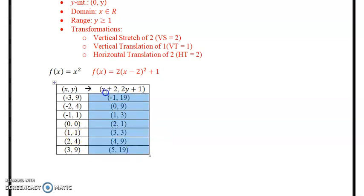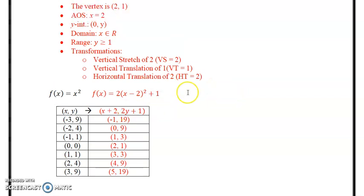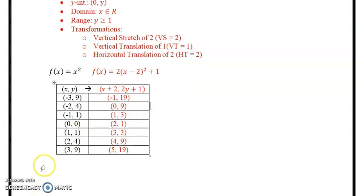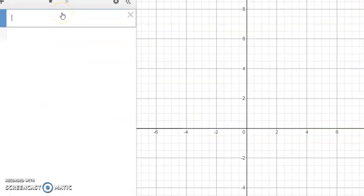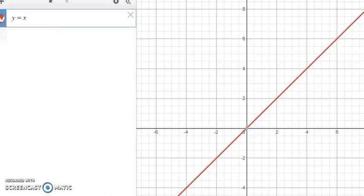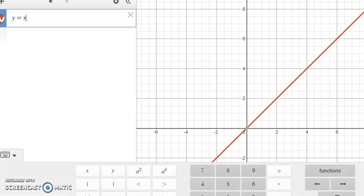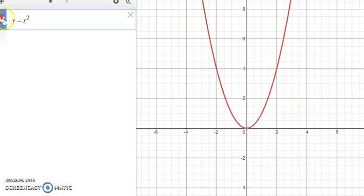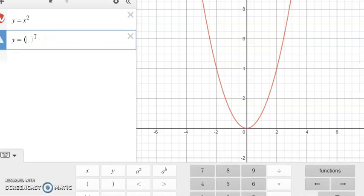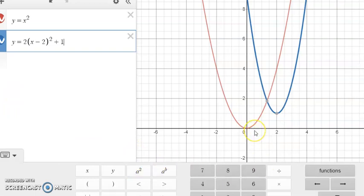So now we're going to go graph this. These values are your red values here, obviously. So let's go graph using Desmos. So we have a graph here for Desmos. Desmos.com. D-E-S-M-O-S.com. So we'll plug the original graph in. Y = x². And there's our graph. Our next graph is going to be the transformed. So that would be 2(x - 2)² + 1. And there you see your transformed graph.